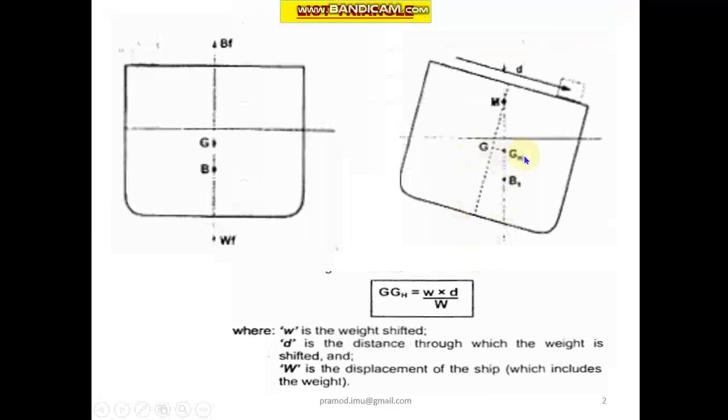So this shift in centre of gravity as we have discussed in previous videos can be calculated by this formula: GG_h, where G_h is the new point of centre of gravity, equals small w into d by capital W, where small w is the weight which is shifted, d is the distance by which it has shifted, and capital W is your ship's mass displacement. So with this formula we can find out the shift in centre of gravity of the vessel when some mass on board the ship is moved in the transverse direction.